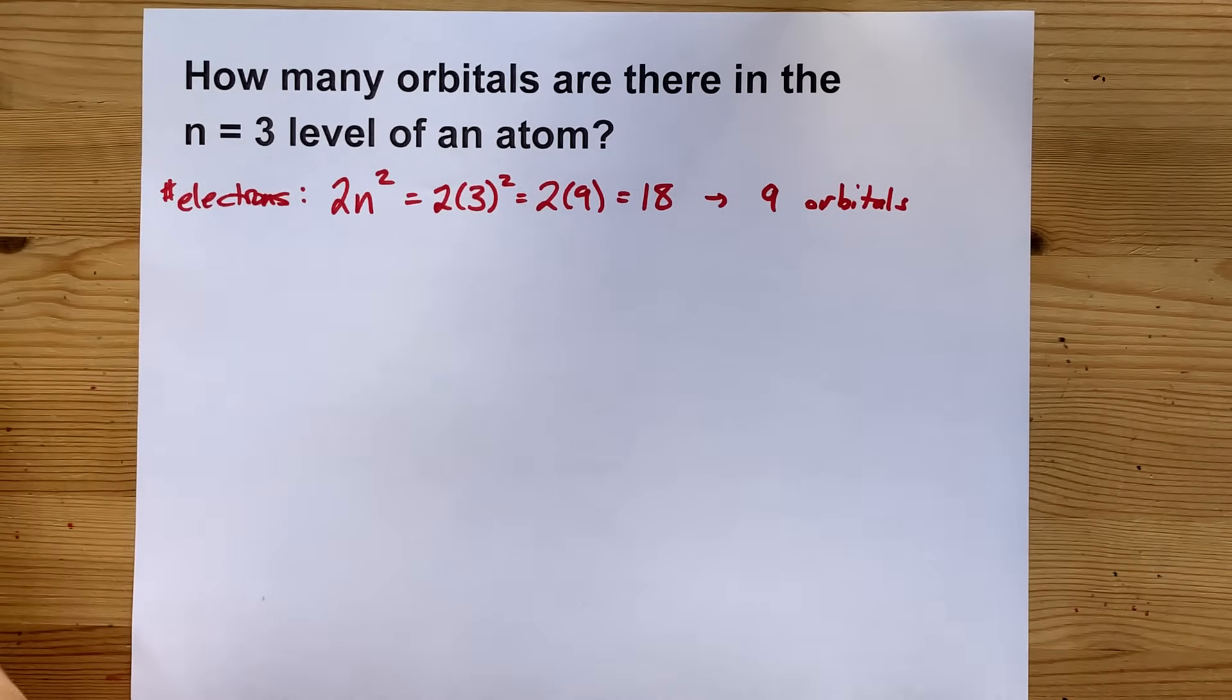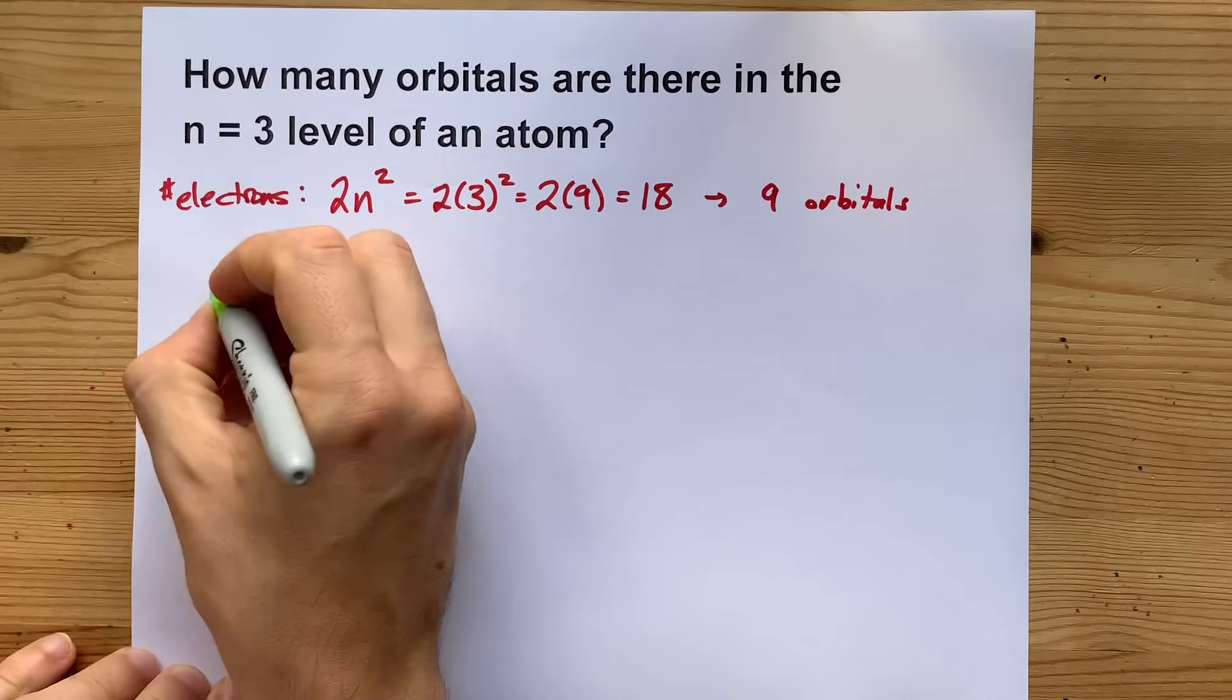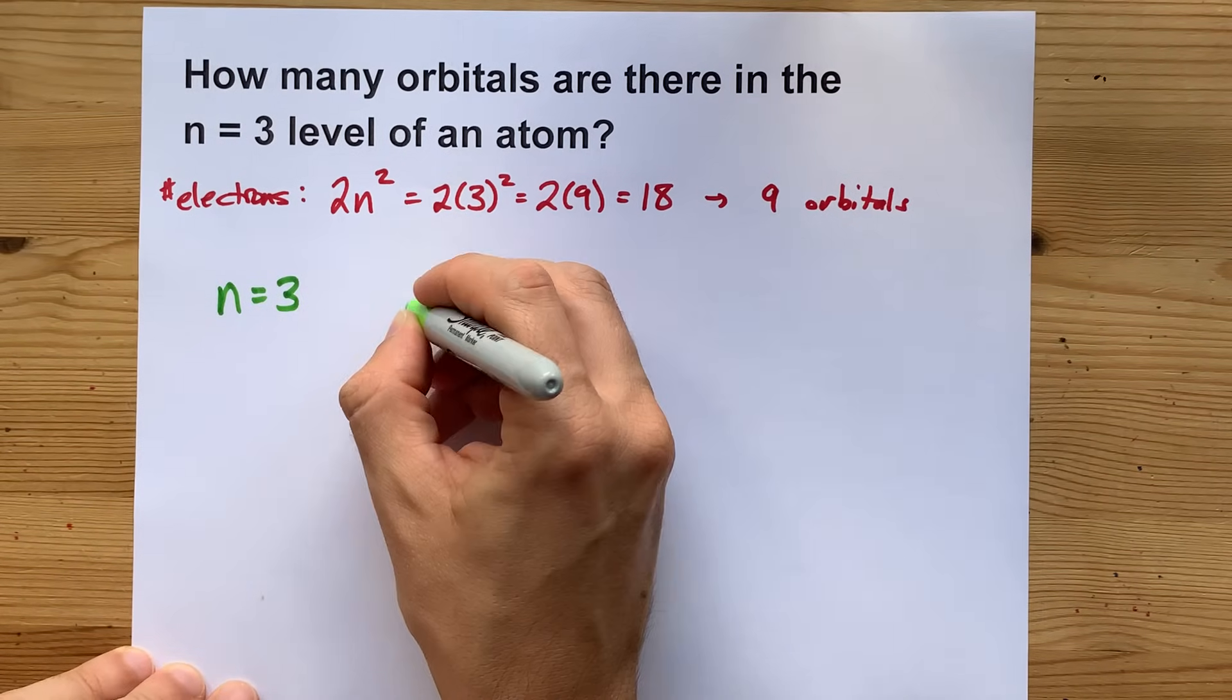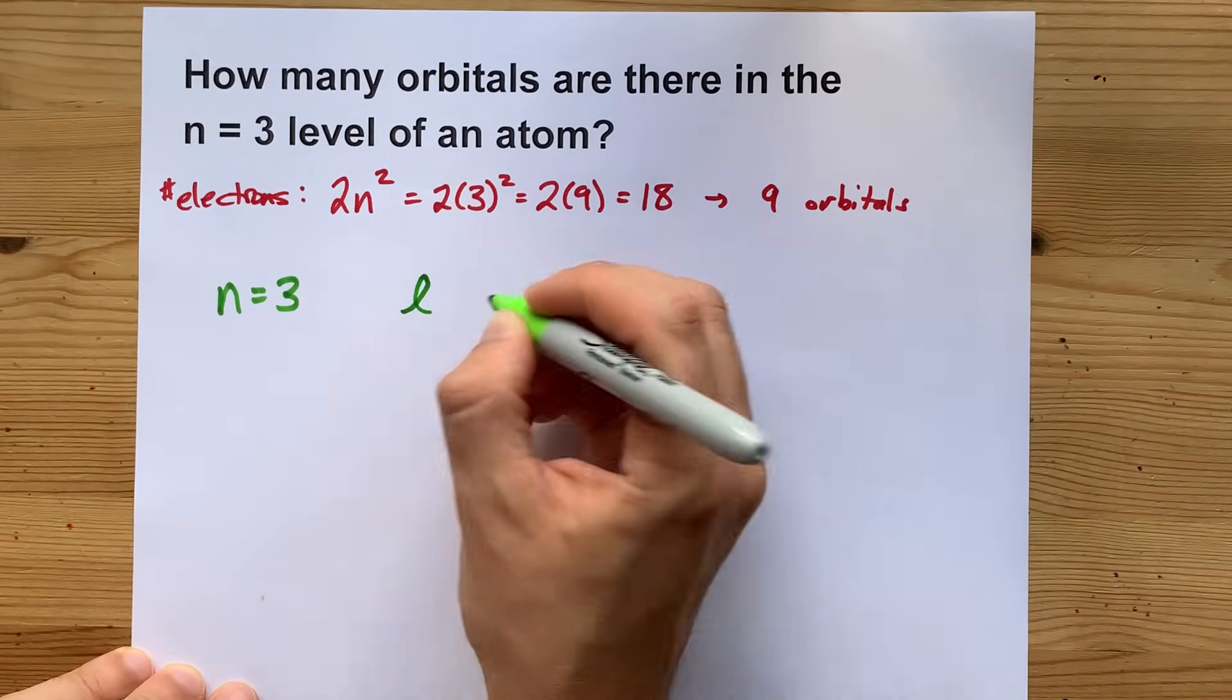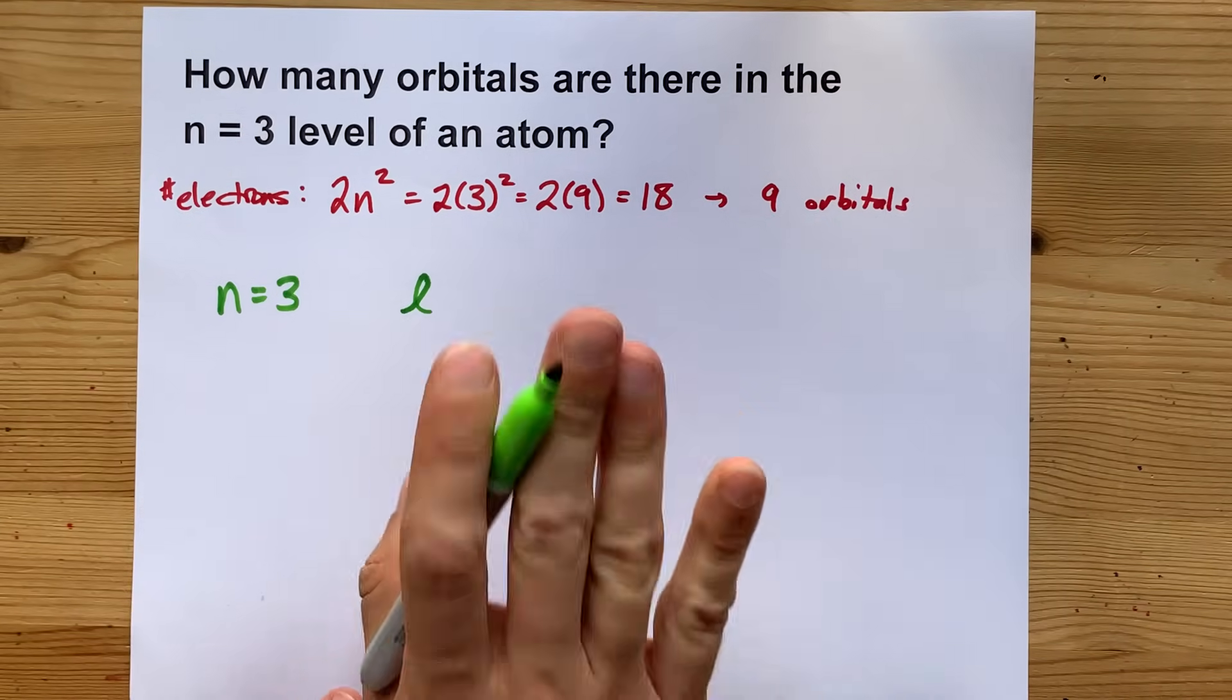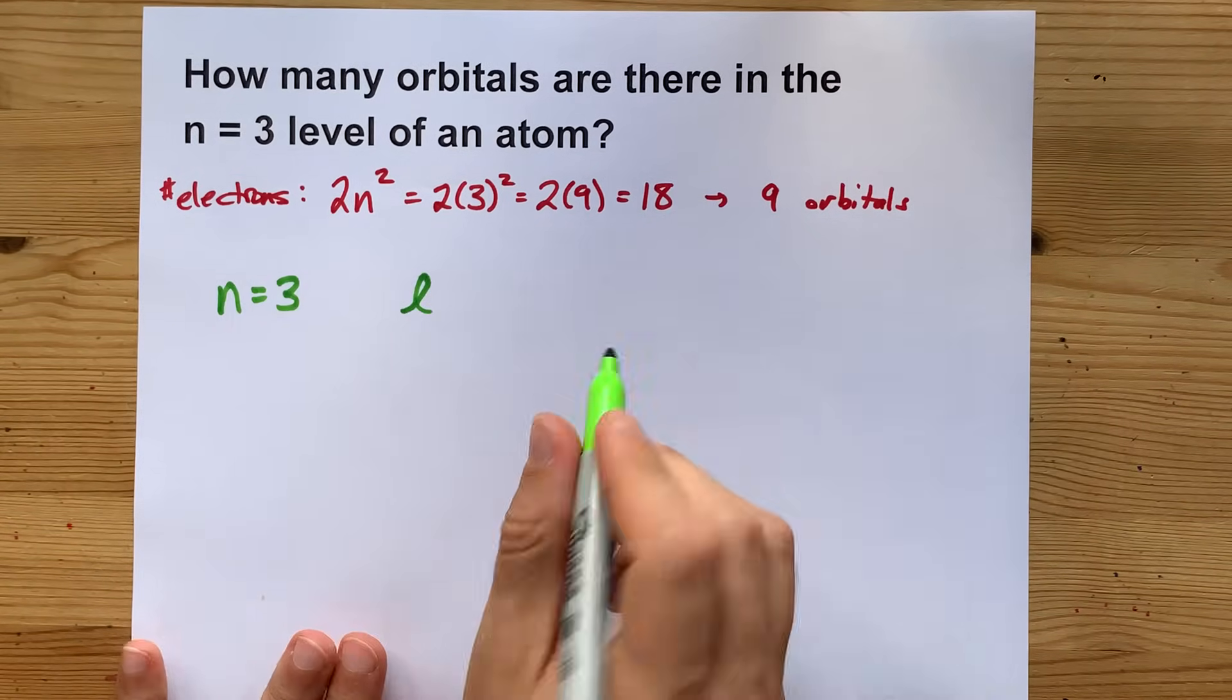But you probably wonder why that's the case or you want to be able to explain it. So the quantum number n equals 3 allows the value of the quantum number L to be anything from 0 up to n minus 1, which for us is 3 minus 1 or 2.